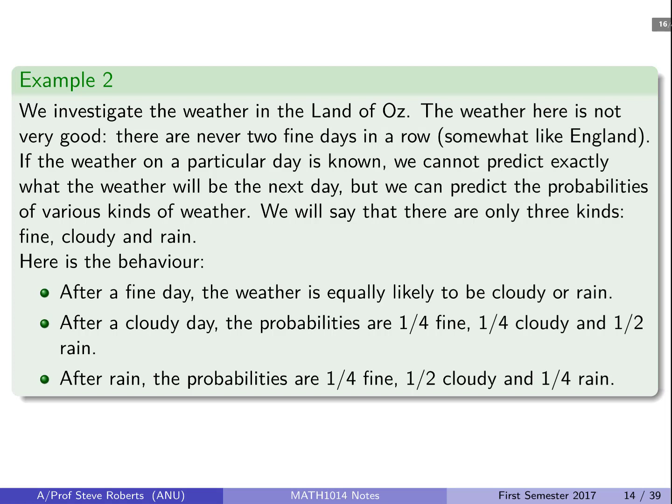And we assume this following behaviour: after a fine day the weather is equally likely to be cloudy or rain. After a cloudy day the probabilities are one quarter of being fine, one quarter cloudy and one half rain. And after rain the probabilities are one quarter fine, one half cloudy and one quarter rain.